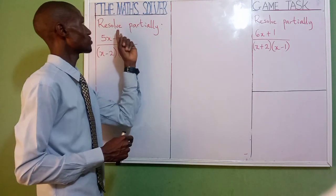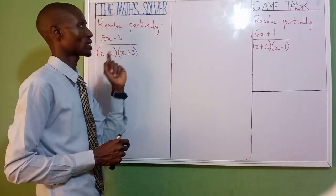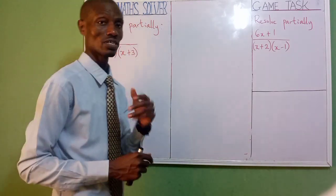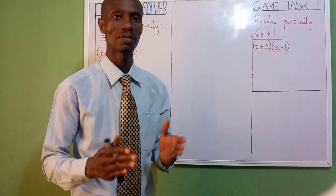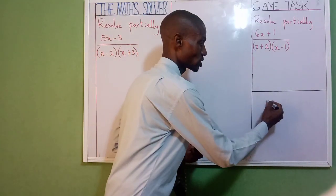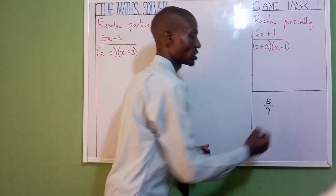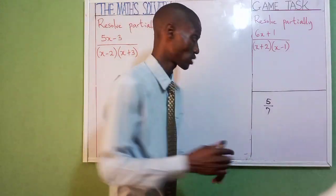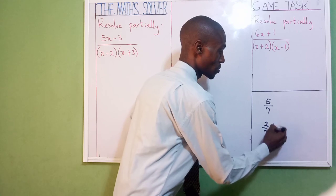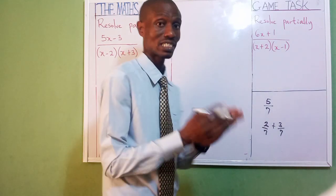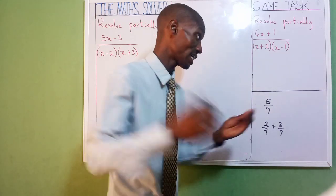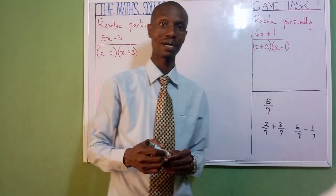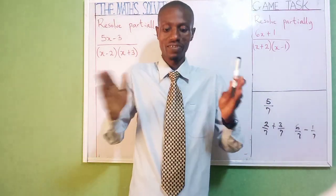How do you solve a question like this? We are told to resolve partially: 5x minus 3 divided by 2x, then x plus 3. We are talking of partial fraction — we know that something like this is a fraction. If I give you 5 over 7, it's a fraction. Now we want to split this into 2. It can be 2 over 7 plus 3 over 7, which is 5 over 7. We are splitting it. It can also be 6 over 7 minus 1 over 7, which is 5 over 7. That is partial fraction — you are dividing your fraction.